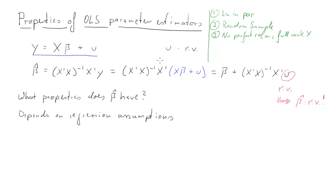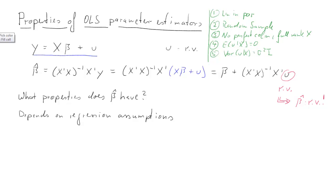The next assumption refers to the error term: we require that the expected value of u, potentially conditional on x, is equal to zero — the zero conditional mean assumption. The fifth assumption again refers to u, but this time to its variance. This is the homoscedasticity assumption, and we require that the variance of u is constant — in matrix terms, sigma squared times the identity matrix.